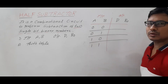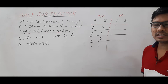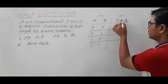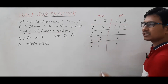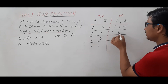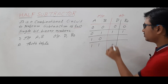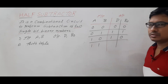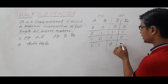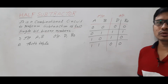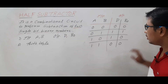For input 0 and 0: 0 minus 0 gives difference 0 and borrow 0. For 0 and 1: 0 minus 1 gives difference 1 and borrow 1. For 1 and 0: difference is 1 and borrow is 0. For 1 and 1: difference is 0 and borrow is 0. So we have the truth table for the half subtractor.